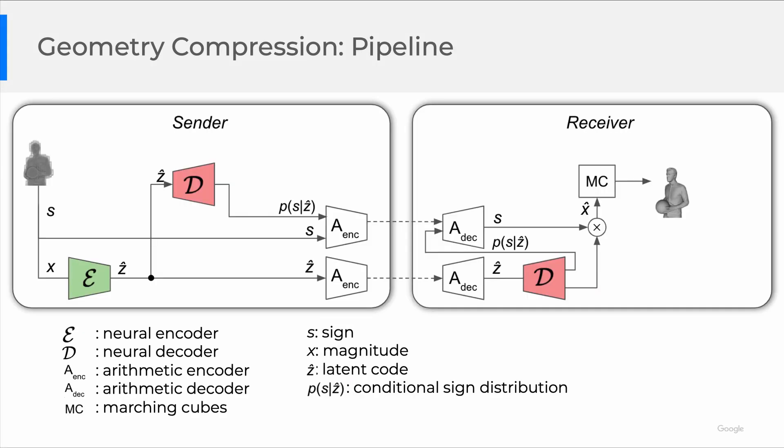This is our geometry compression pipeline, which contains a sign branch and a magnitude branch. Magnitudes are compressed lossily in the form of a latent code z-hat, while the signs are compressed losslessly using the conditional distribution p, which allows us to capture the spatial structure to better compress signs. Note that the decoder d needs to be run at the sender and receiver to ensure the sign arithmetic coders on both sides using the same probabilities.